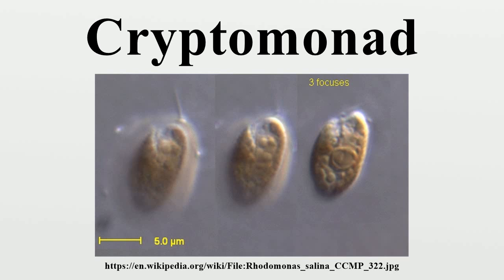Cryptomonads have one or two chloroplasts, except for Chilomonas, which has leukoplasts, and Goniamonas, which lacks plastids entirely. These contain chlorophylls A and C, together with phycobiliproteins and other pigments, and vary in color. Each chloroplast is surrounded by four membranes, and there is a reduced cell nucleus called a nucleomorph between the middle two.